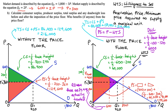Intuitively, since the price has risen due to the price floor, we would expect producers to benefit. And indeed, consumer surplus decreased from 86,400 to 60,000, so consumers are worse off. Producer surplus increased from 129,600 to 150,000, so producers are better off. The price floor redistributes surplus from consumers to producers while creating a deadweight loss.